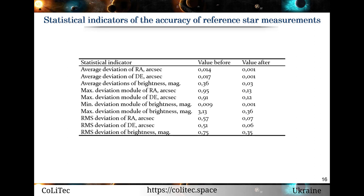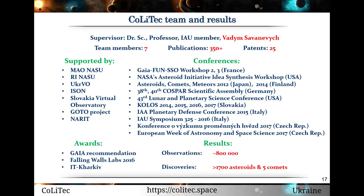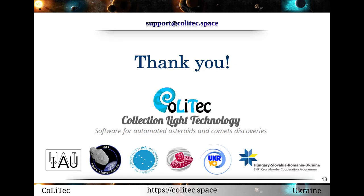The Kalytec project is developed by enthusiasts. Kalytec has assisted in making over 1,700 discoveries of asteroids, including 5 NEOs, 21 Trojan asteroids of Jupiter, and 1 Centaur. It has been used in about 800,000 observations, during which 5 comets were discovered. Thank you for your attention!